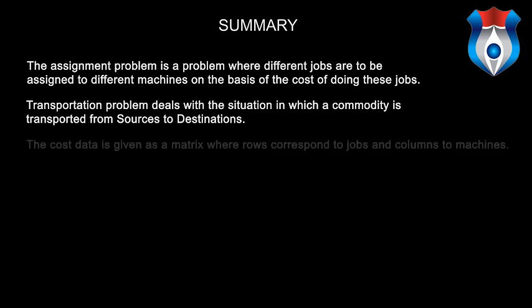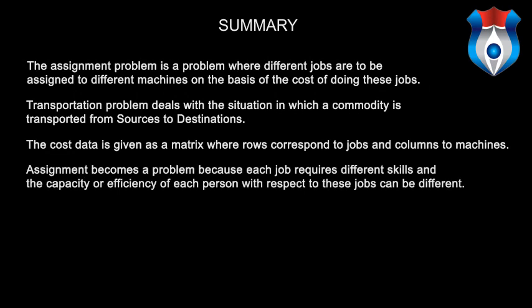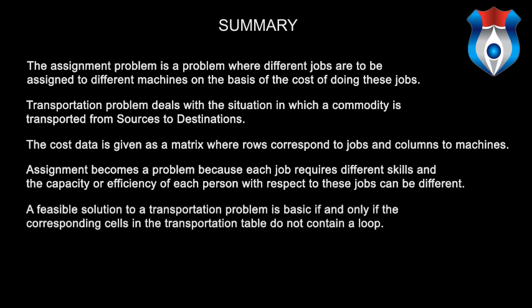In summary, the assignment problem is a problem where different jobs are to be assigned to different machines on the basis of the cost of doing these jobs. The transportation problem deals with the situation in which a commodity is transported from sources to destinations. The cost data is given as a matrix where rows correspond to jobs and columns to machines. Assignment becomes a problem because each job requires different skills and the capacity or efficiency of each person with respect to these jobs can be different. A feasible solution to a transportation problem is basic if and only if the corresponding cells in the transportation table do not contain a loop.